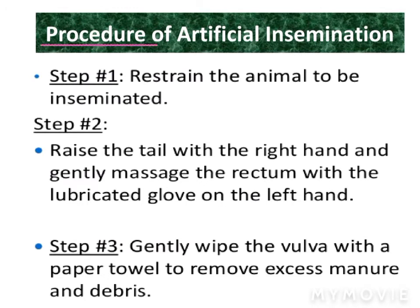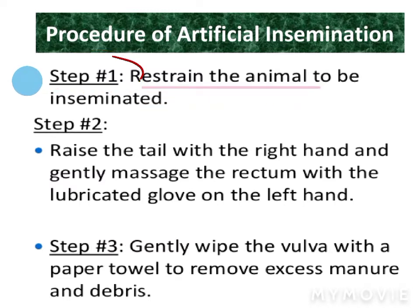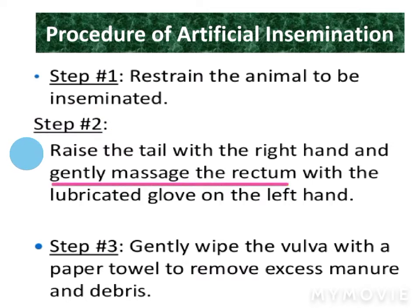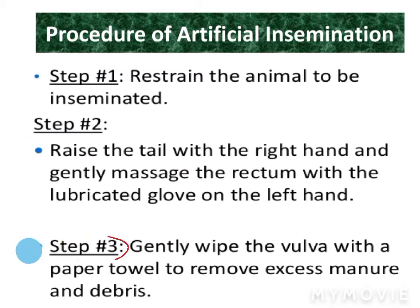The procedure of artificial insemination: Step 1 is restrain the animal to be inseminated. Step 2 is raise the tail with the right hand and gently massage the rectum with lubricated gloves on the left hand. Step 3 is gently wipe the vulva with a paper towel to remove excess manure and debris.